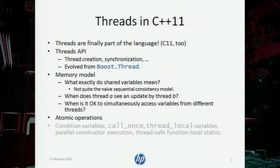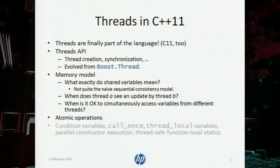Threads in C++11 — finally, unlike C++03, threads are part of the language. This is also true for C11. That takes several forms. There has to be a threads API: some way to create threads and provide for mutual exclusion. The C++11 API is essentially evolved from the boost threads library with some refinements. No matter what threads library we use, there's a more fundamental issue affecting compilers: what do shared variables mean? How can threads interact?